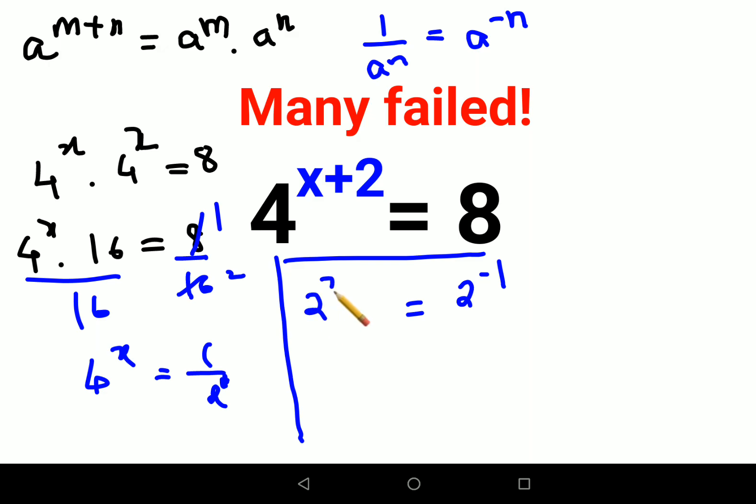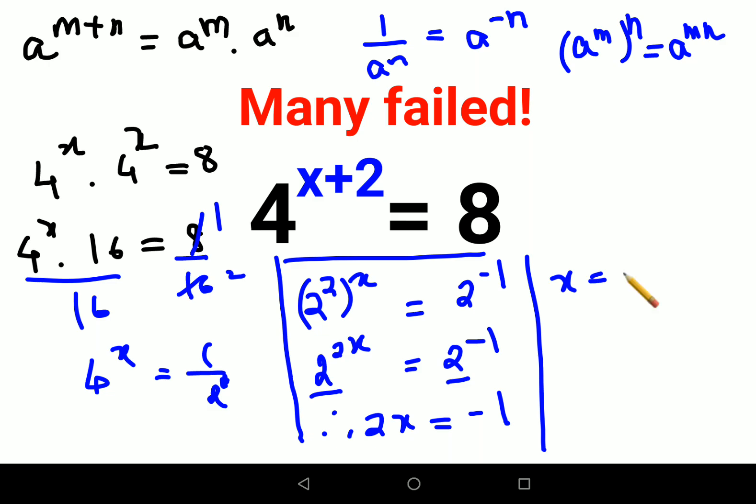Now remember in your LHS if you have something like a raised to m the whole raised to n, it can be written as a raised to m into n. So I will write 2 raised to 2x equals to 2 raised to minus 1. Since the bases are same, 2x equals to minus 1, therefore value of x is minus 1 upon 2.